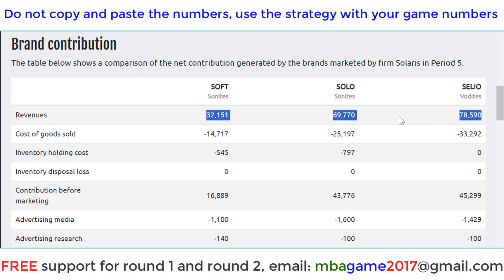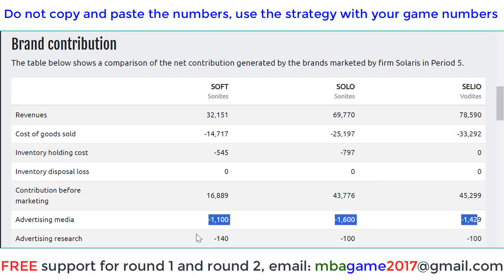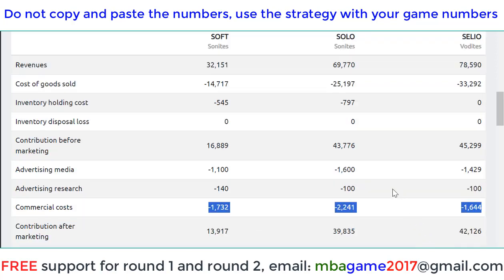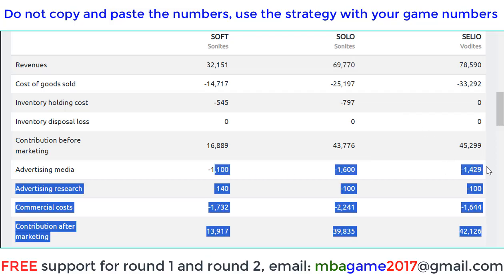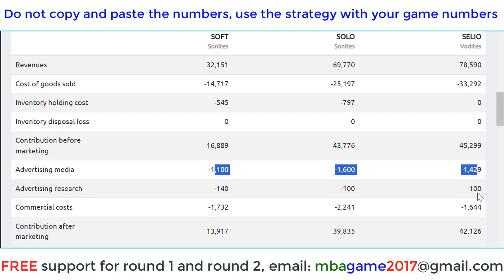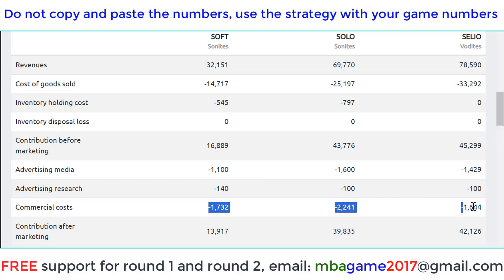After five rounds, the company started getting good sales and very good profit from the Vodai. So if you have 10 rounds, you can start early. You can also see the advertising media, advertising research, and commercial cost for each brand. Looking at this in more detail, you should spend more for the Sold products because they bring more sales and more profit — and you should also spend more on salesforce for them, as that brings better sales and profit.